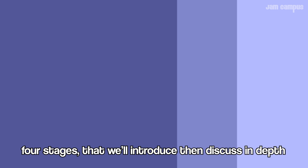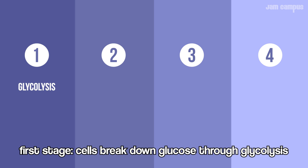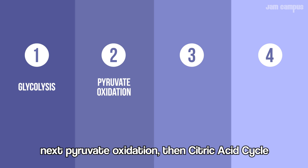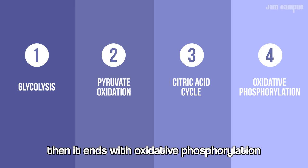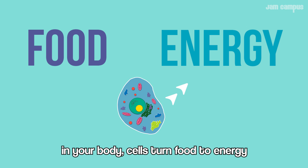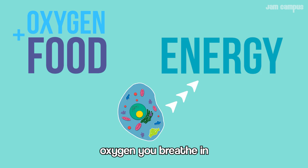Respiration that's aerobic — using oxygen that you breathe. Four stages that we'll introduce then discuss in depth. First, cells break down glucose through glycolysis. Next, pyruvate oxidation, then the citric acid cycle, then it ends with oxidative phosphorylation.